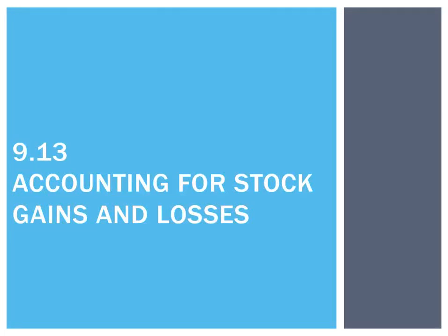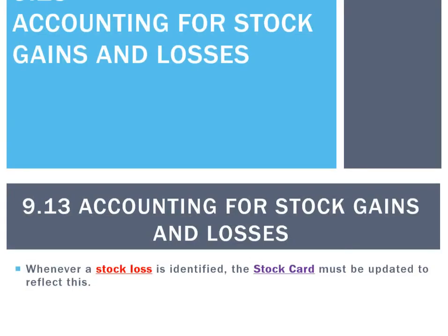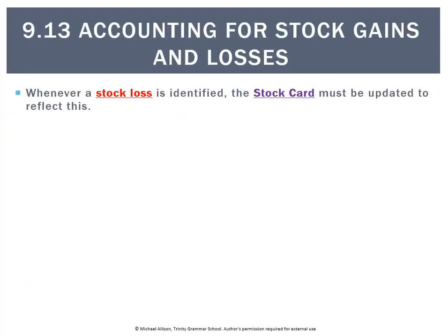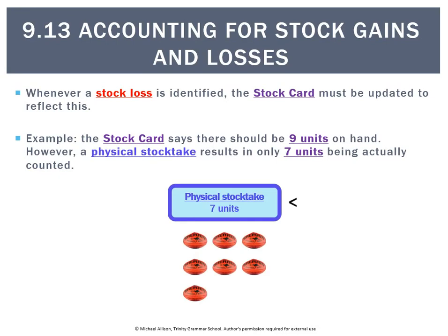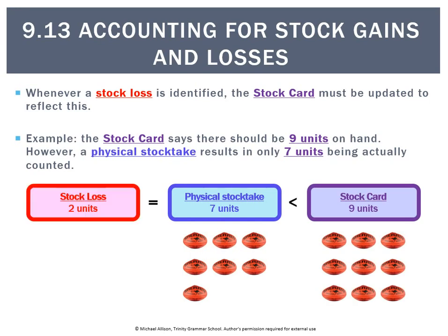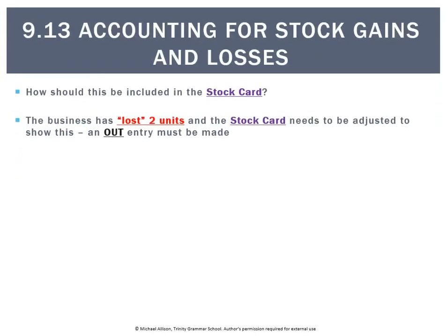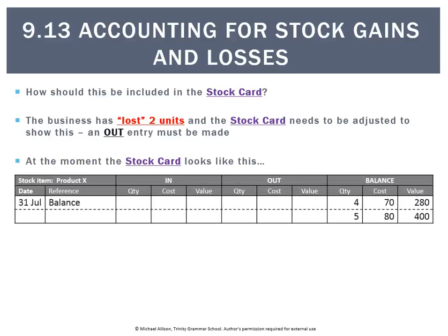Once we've identified stock losses or stock gains, we now need to account for them. The stock card is always going to be updated to reflect any stock loss or stock gain. For example, if the stock card says there should be 9 units on hand, we do a stock take and there's only 7. That's a situation where we've counted less than there should be — a stock loss of 2 units. If we've lost 2 units, there's going to be an entry in the out column, because the out column reflects all stock that's left the business.